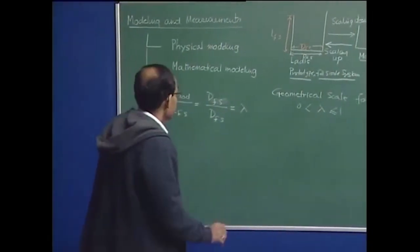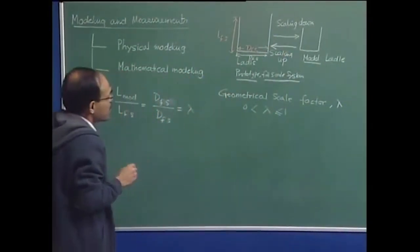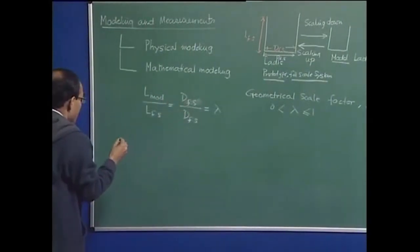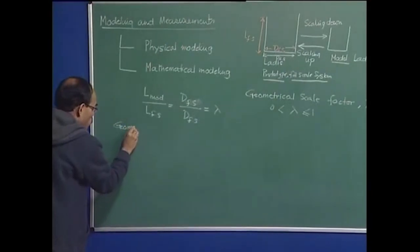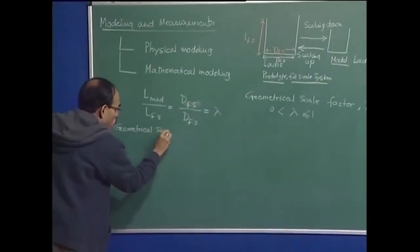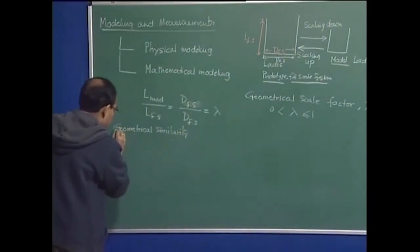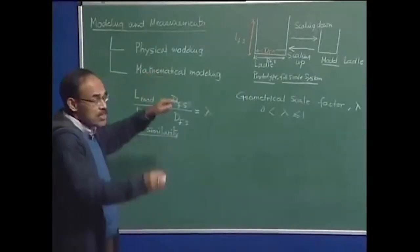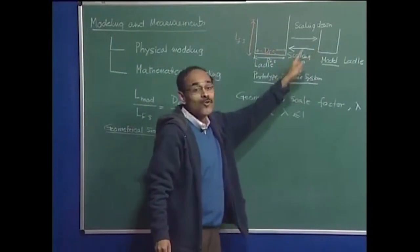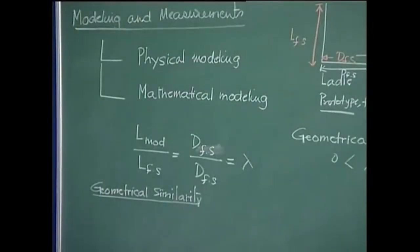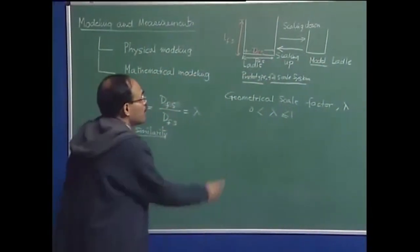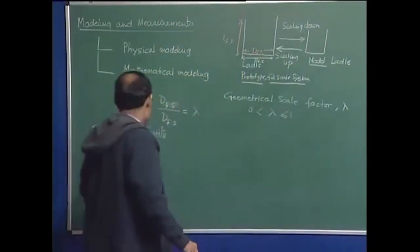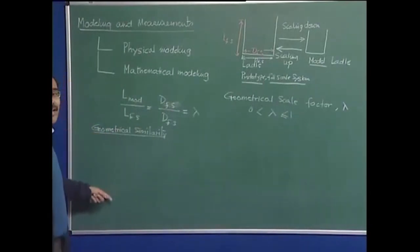We can construct a physical model by considering the shape of the ladle itself. This falls under the category of geometrical similarity. But geometrical similarity does not tell us how to operate the model ladle — for example, at what rate to inject argon, or what fluid to use. There are other states of similarity which we will come to.